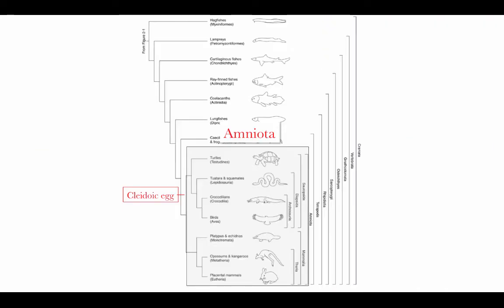The amniotes — the other side of this tetrapod lineage — are characterized by the evolution of something called the cleidoic egg. The cleidoic egg is surrounded by a waterproof shell of some kind, making amniotes relatively independent of water for the purpose of reproduction. The cleidoic egg creates a watery microenvironment within the egg that is sufficient for the development of the fetus. That is the common feature of this group called the amniotes.